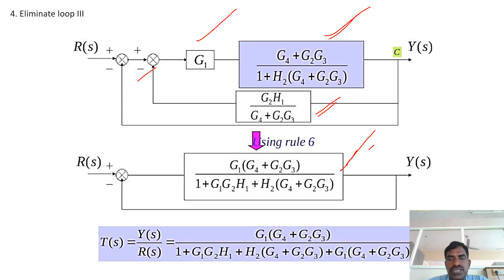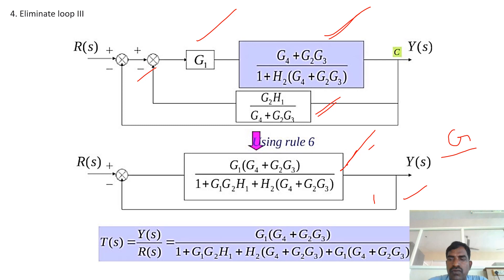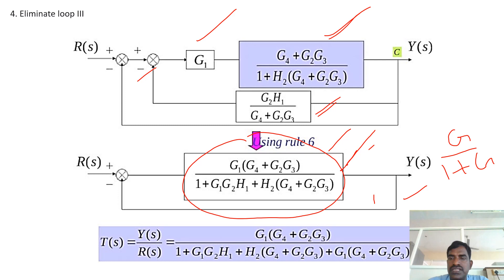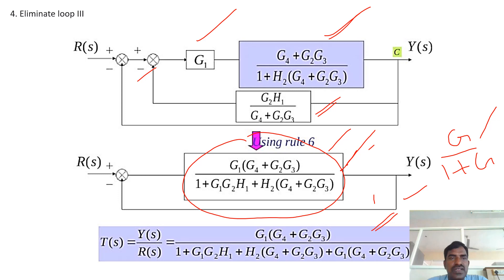Finally, there is only one loop remaining, and that loop has a value of 1 — meaning H equals 1. This loop is a negative feedback loop, so the equation is G by (1 plus G). Substituting accordingly, the final transfer function T(s) = Y(s)/R(s) equals G1·(G4 plus G2·G3) divided by 1 plus G1·G2·H1 plus H2·(G4 plus G2·G3) plus G1·(G4 plus G2·G3). This is the final answer after reducing the block diagram using reduction techniques. Thank you.